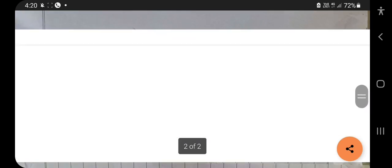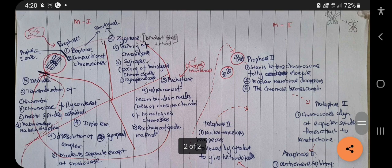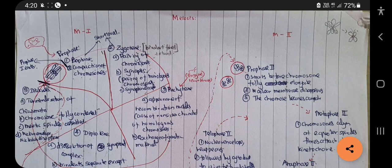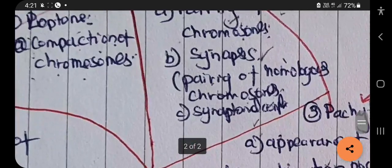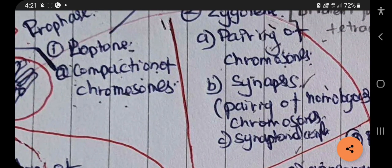Next we will see about meiosis. The cell enters into prophase. The prophase of meiosis is divided into five phases: leptotene, zygotene, pachytene, diplotene, and diakinesis. In leptotene there will be compaction of the chromosomes — this compaction of chromosomes also occurs during the prophase of mitosis.